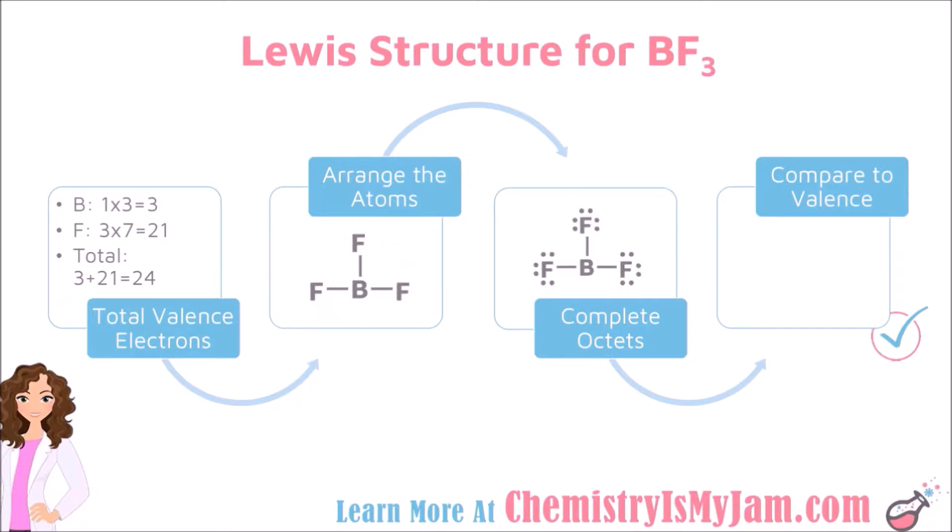The last step is to compare what I have drawn to the number of valence electrons that should be present. I have drawn 2, 4, 6, 8, 10, 12, 14, 16, 18, 20, 22, 24 valence electrons. Remember that a bond counts as 2 electrons. I should have 24 valence electrons. What I have drawn matches what I should have. This is a good Lewis structure for boron trifluoride.